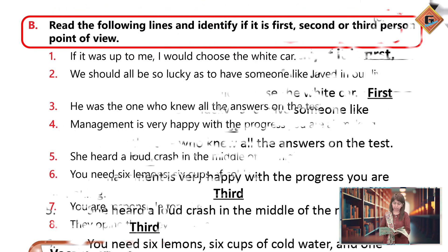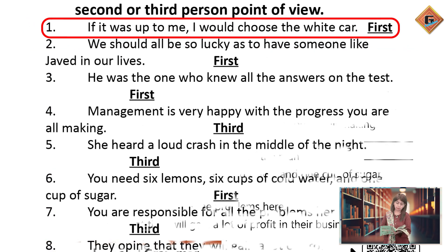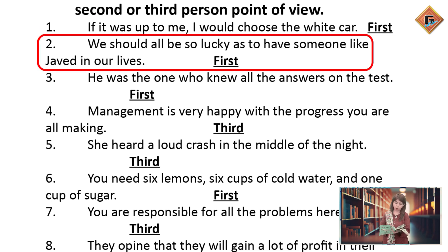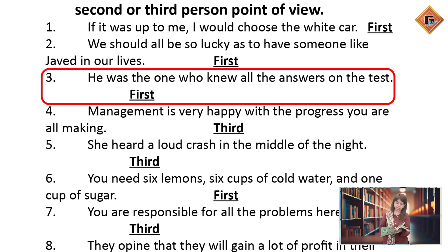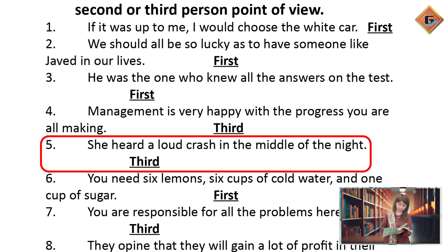Now, read the following lines and identify if it is first, second, or third person point of view. 'If it was up to me, I would choose the white car.' — First. 'We should all be so lucky as to have someone like Javed in our lives.' — First. 'He was the one who knew all the answers on the test.' — First. 'Management is very happy with the progress you are making.' — First.